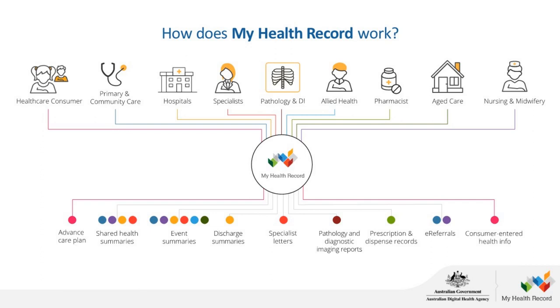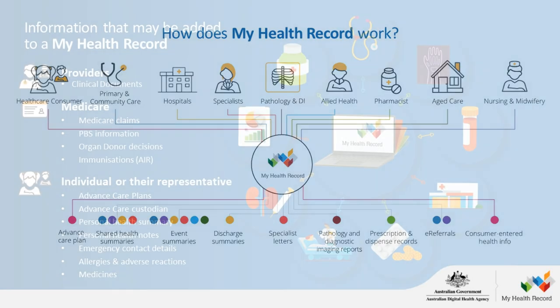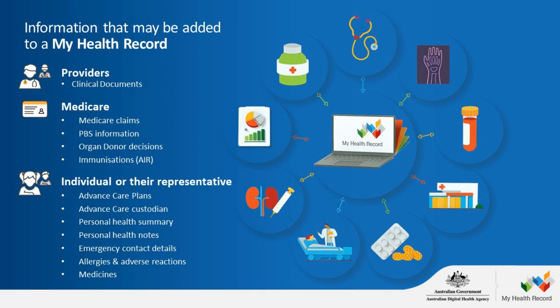To summarise, there are three sources of information that can be entered into the My Health Record. Firstly, healthcare provider entered data — clinical documents such as health summaries, event summaries, and pathology results. Secondly, Medicare sourced information, including claims data, PBS data, Australian Immunisation Register, Australian Organ Donor Register, and DVA claiming events. Thirdly, patient entered data — personal health notes, personal medications, allergies and summaries, child development information and advance care plans.